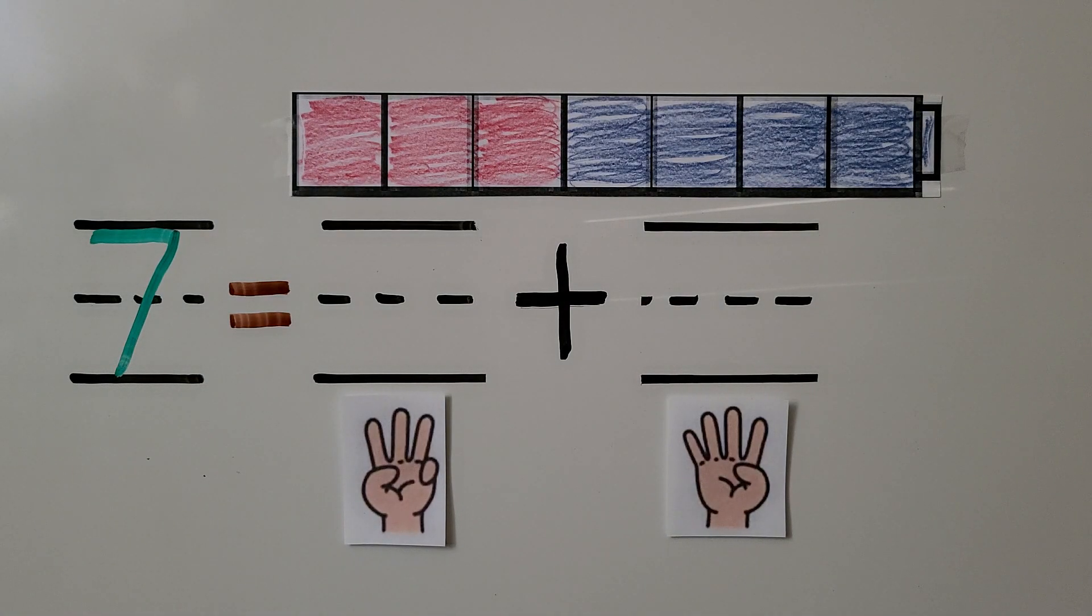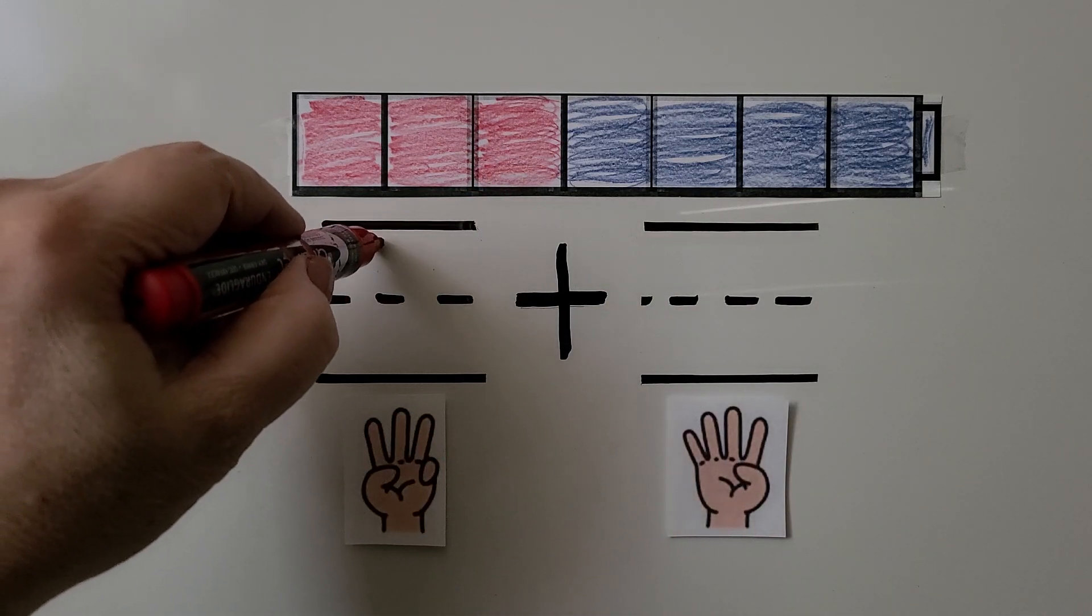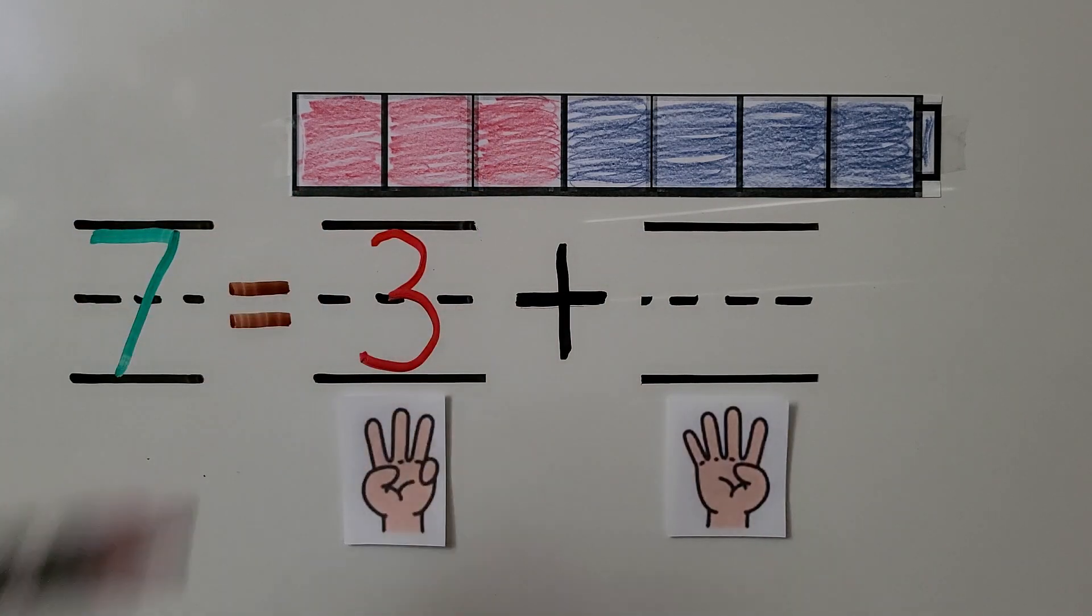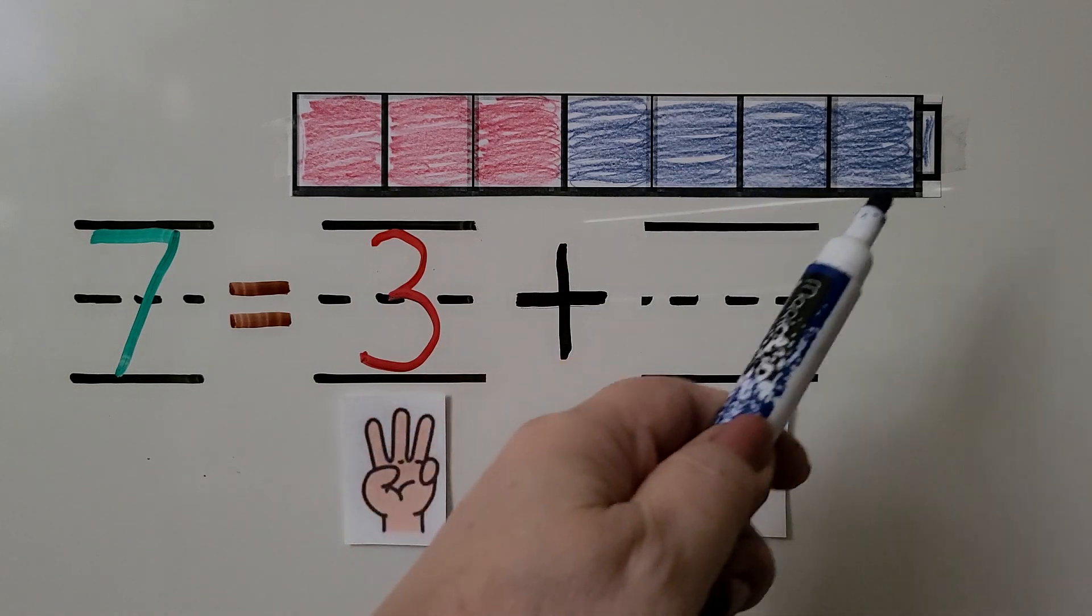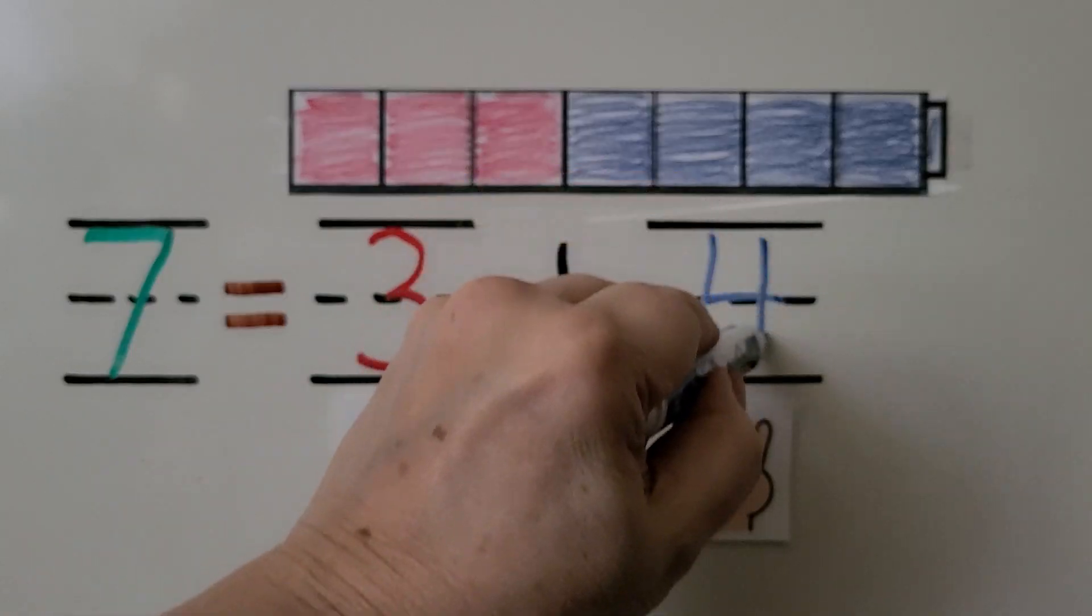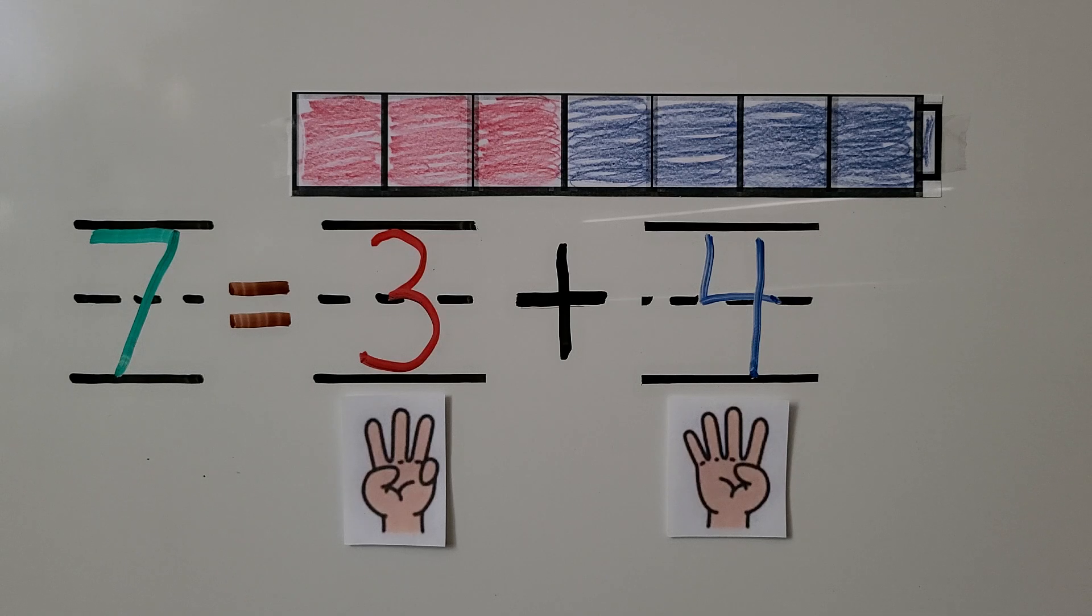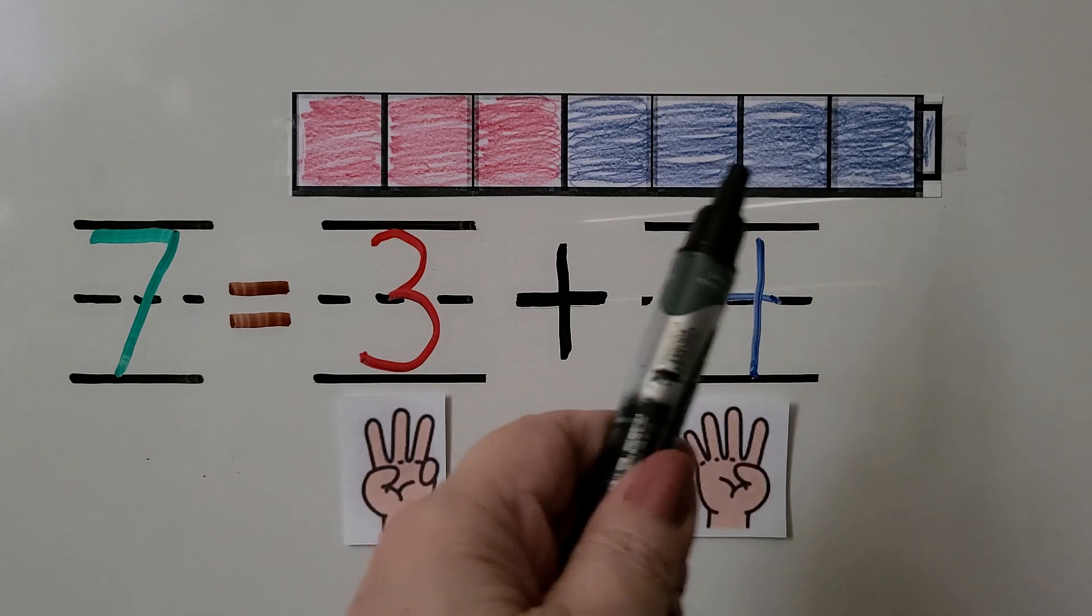We colored 1, 2, 3 of the cubes red. We colored 1, 2, 3, 4 of the cubes blue. We can write the 4. 7 is equal to 3 plus 4. So we can show 7 cubes in a cube train by coloring 3 red and 4 blue.